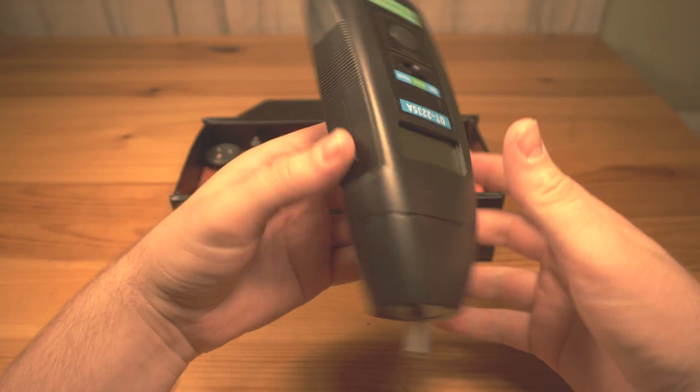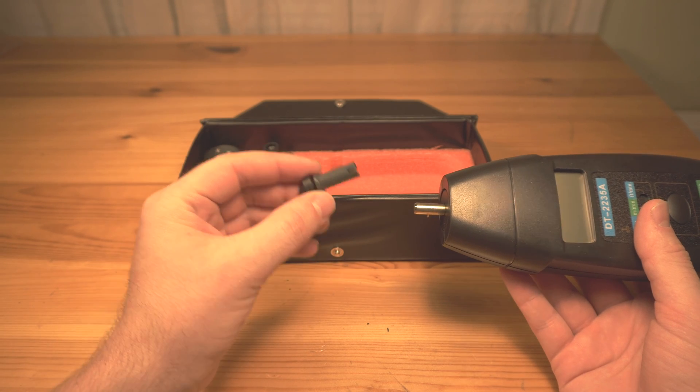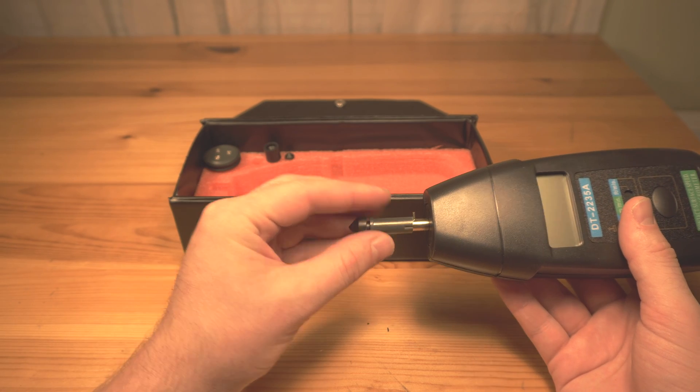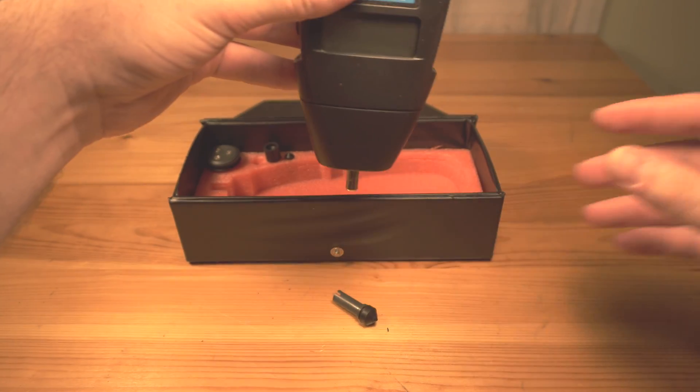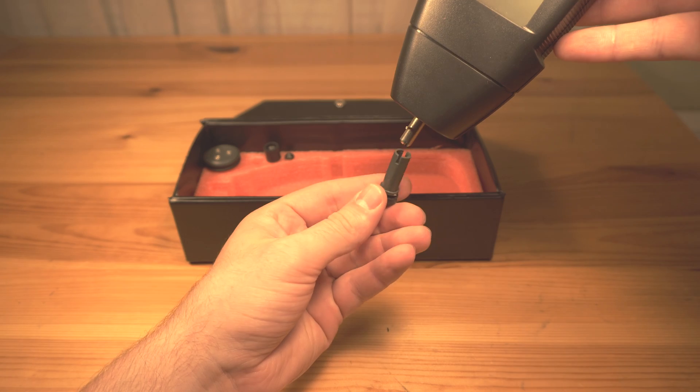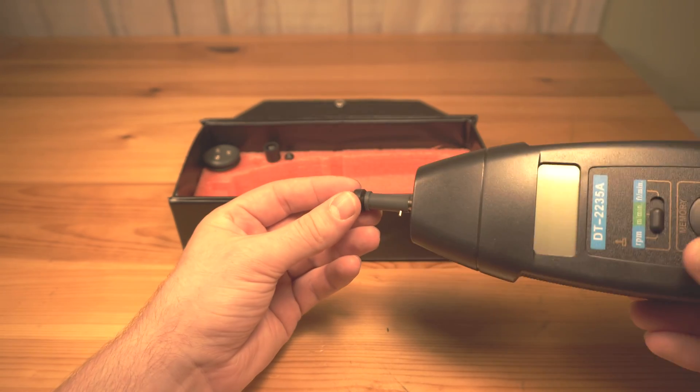So to test the motor, you just put on a cap. It comes with all different types of caps for different rotating objects. You put it on. You put it on top of the flywheel. Whoops, and it falls off. And you just hold it down and as the device spins, it will tell you exactly the speed of the motor.